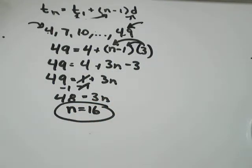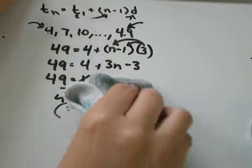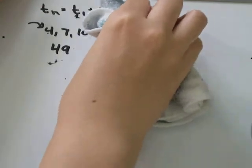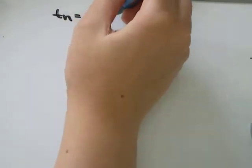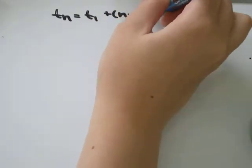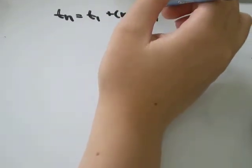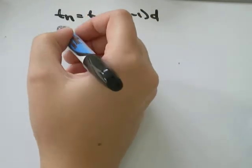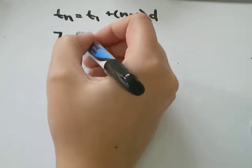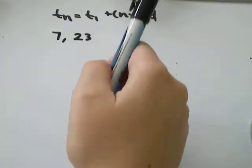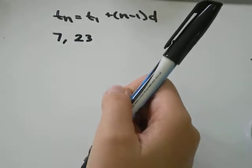So the last thing I'm going to talk about in this video is finding the arithmetic mean. So I'll just erase that. So to find the arithmetic mean, we're going to use the same formula. T_n equals T_1 plus n minus 1 times d. And I have the numbers up here. I've got 7 and 23. And I want to find the 3 arithmetic means in between them.